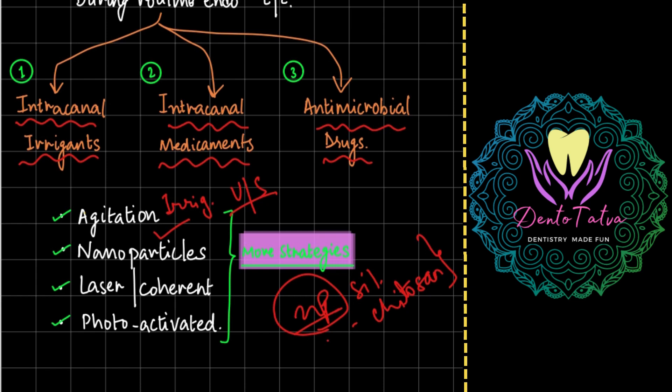These act as a medium because they are so tiny, they are so small, this helps to deliver the intracanal medicament or the irrigating solution well within the dentinal tubules. The bacteria can penetrate up to 500 microns inside the tubules, so you need something that can go and penetrate at such greater depths. Then there are other strategies including laser and photo-activated disinfection.